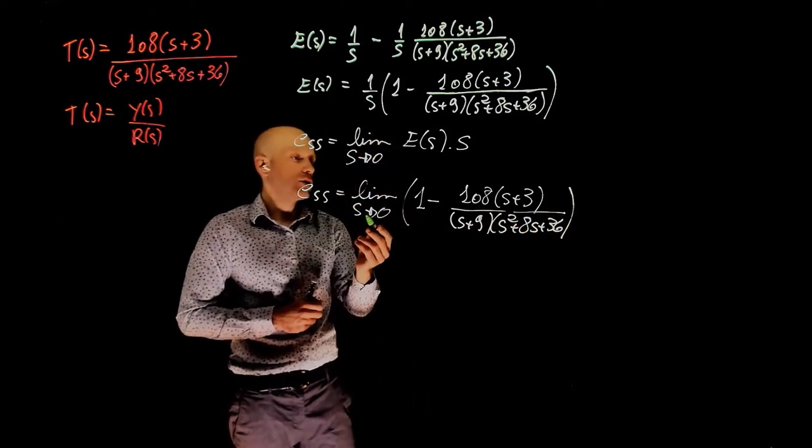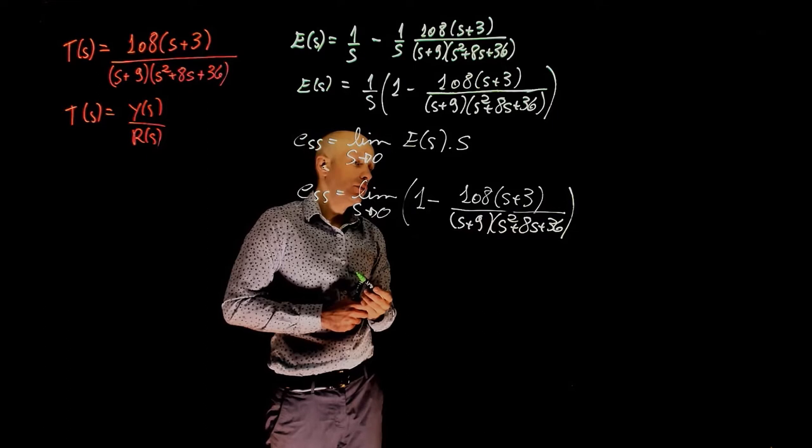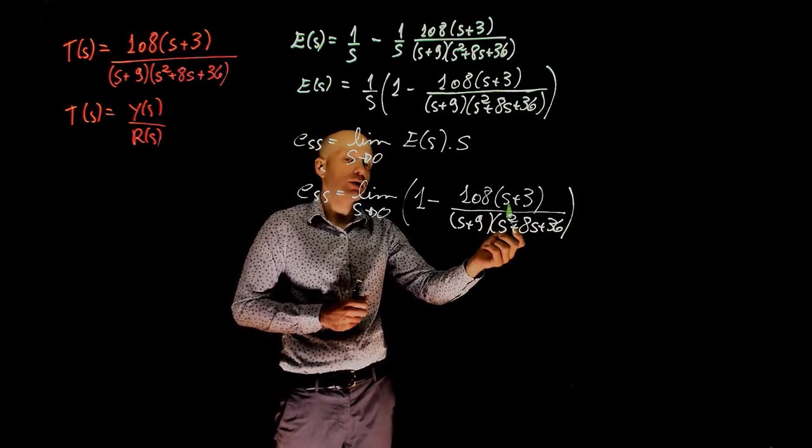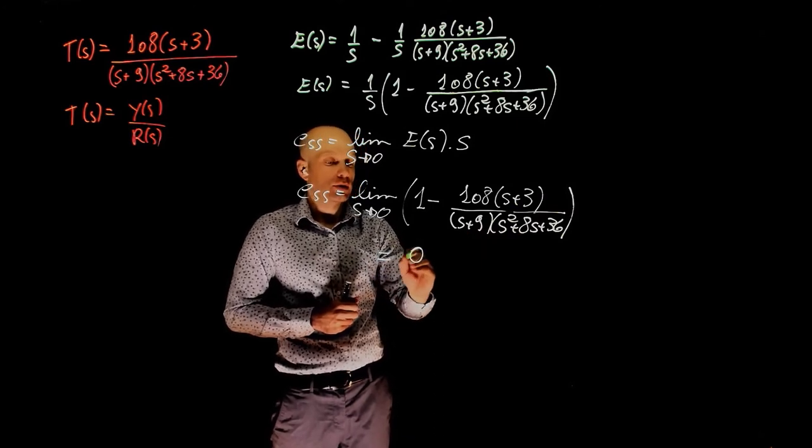Now, when s tends to 0, we have 108 times 3 divided by 9 times 36. The result here is 1, 1 minus 1 is 0.